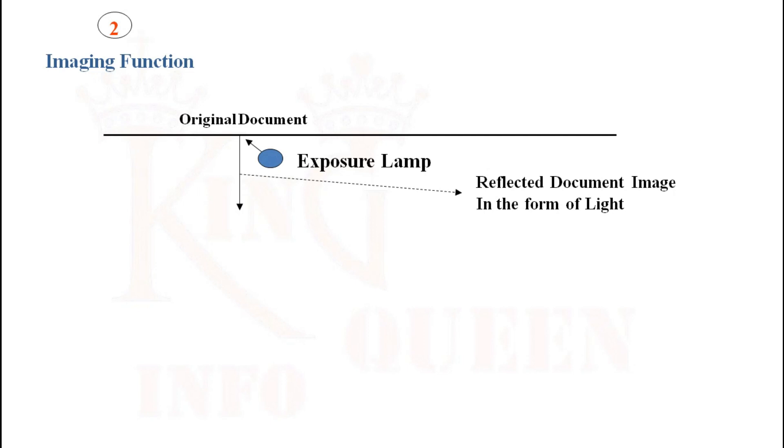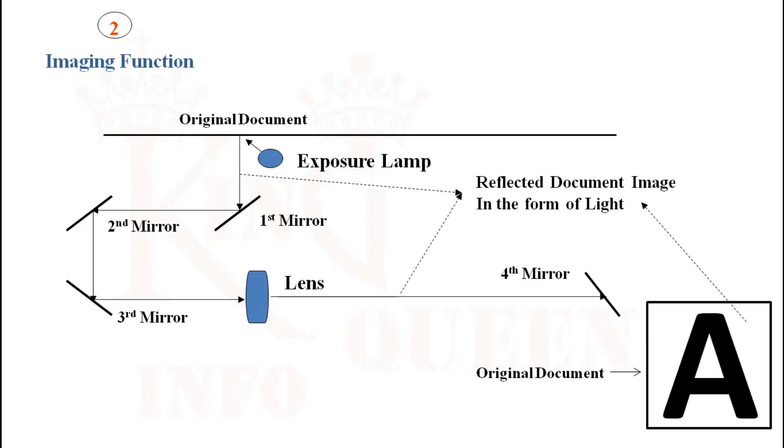The light falls on the first mirror, gets reflected, falls on the second mirror, gets reflected, falls on the third mirror, gets reflected, and passes through the lens where it gets reduced or enlarged and falls onto the fourth mirror.